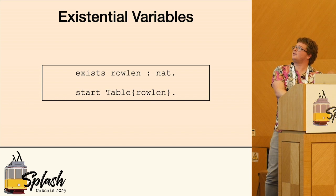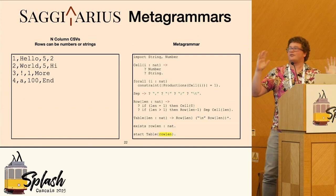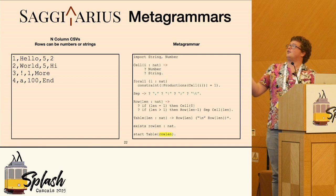I can say there is some row length, which is a natural number, and you start at a table of that row length. So I've made that change. Now I have this existential, and we can say it can be kind of this arbitrary fixed row length. And we've now actually described the full space of N-column CSVs in this kind of idealized CSV.